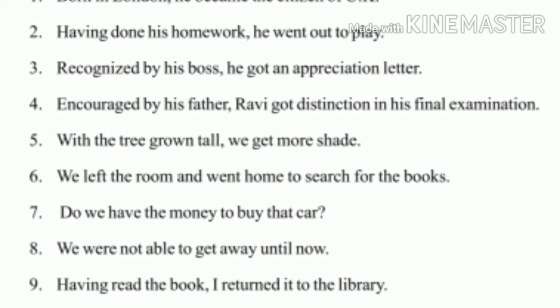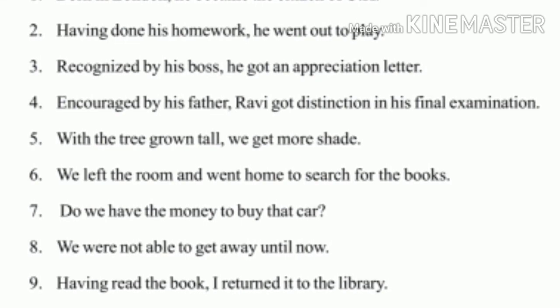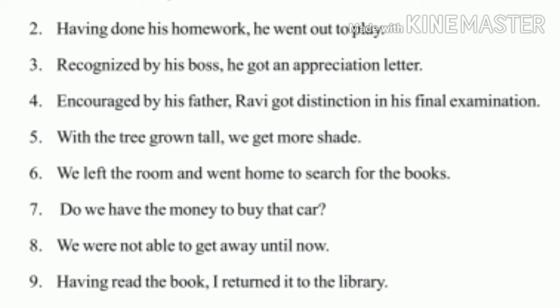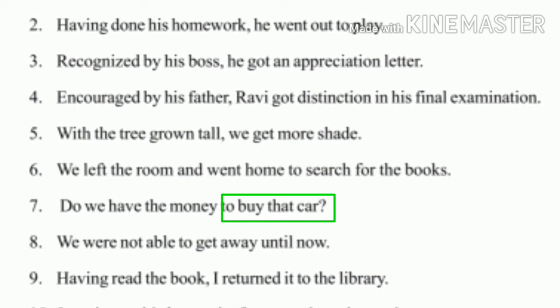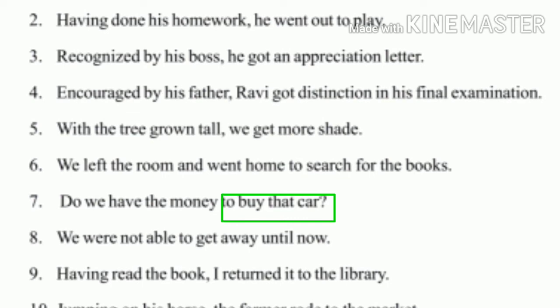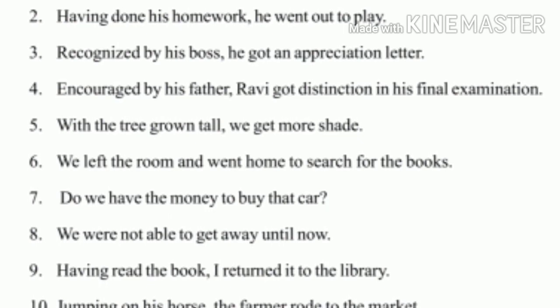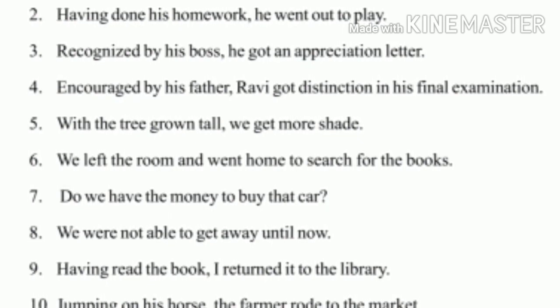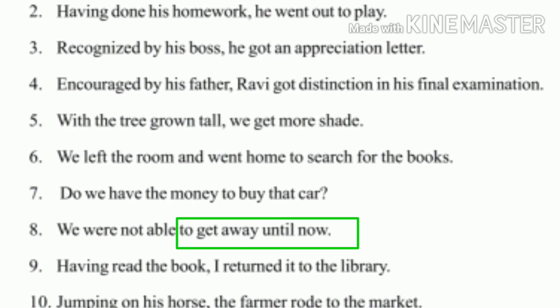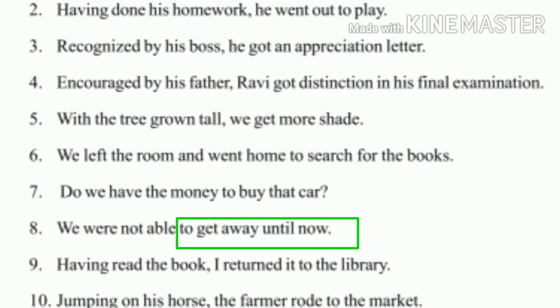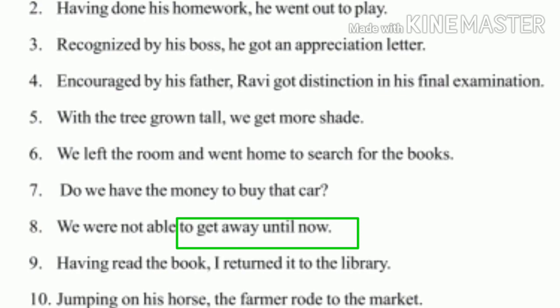Next: 'Do we have the money to buy that car?' Here, 'to buy that car' is the non-finite clause, because after the infinitive 'to,' there is no auxiliary verb, so it does not indicate any tense. Next: 'We were not able to get away until now.' Here, 'to get away until now' is the non-finite clause — after the infinitive 'to,' there is no auxiliary verb.